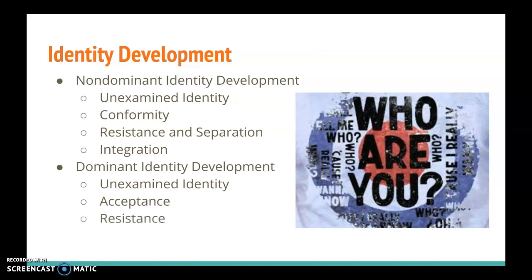Next, we reach resistance. Resistance happens when an individual acknowledges the unearned advantages that they are given by their membership in a dominant identity, and they sometimes feel guilt or shame about those unearned advantages. As a result, they may begin to dissociate from their own dominant identity group.